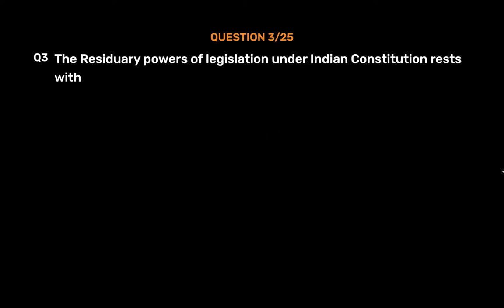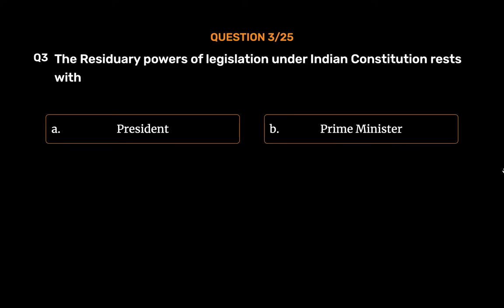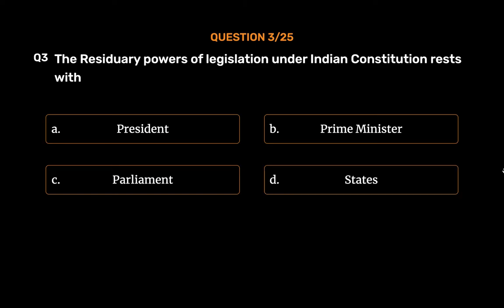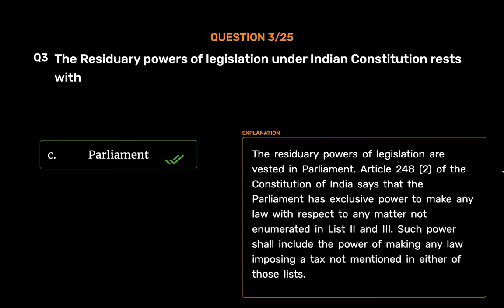Question No. 3. The residuary powers of legislation under the Indian Constitution rest with. Option A: President. Option B: Prime Minister. Option C: Parliament. Option D: States. The correct answer is Option C: Parliament. The residuary powers of legislation are vested in Parliament. Article 248(2) of the Constitution of India says that the Parliament has exclusive power to make any law with respect to any matter not enumerated in List 2 and 3. Such power shall include the power of making any law imposing a tax not mentioned in either of those lists.